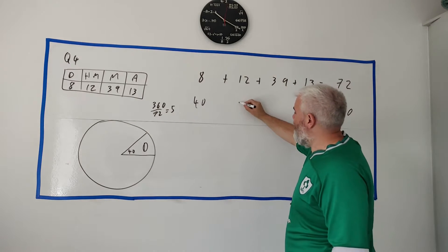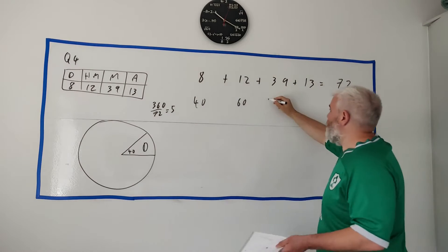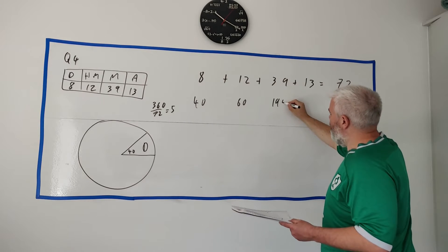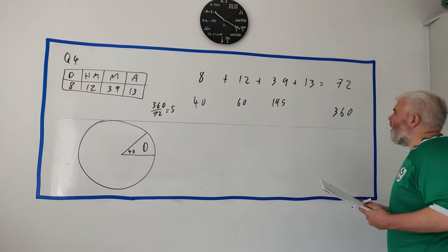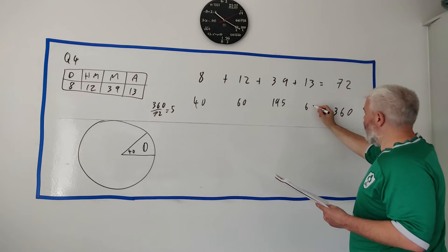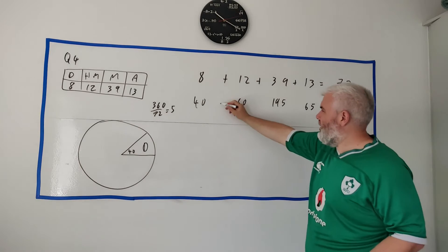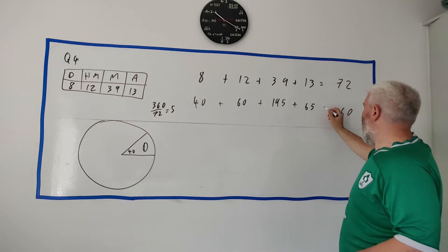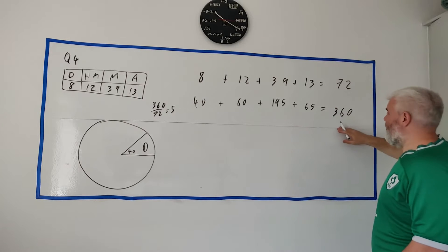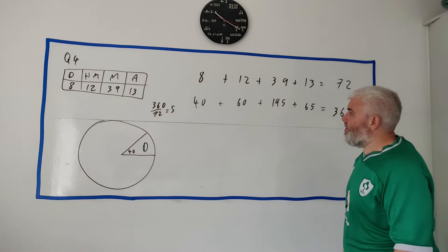12 students will get 60 degrees, 39 students gets 195 and 13 students get 65. If we were to add all this together, and it's probably a good idea to check, we would get 360 degrees.